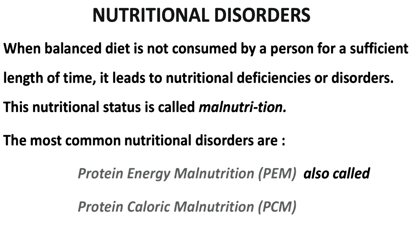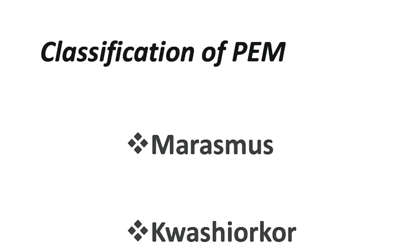When a person is not taking a balanced diet, it leads to nutritional disorders. Those nutritional disorders are of two types: undernutrition, also called malnutrition, and overnutrition. Undernutrition is also called protein energy malnutrition or protein calorie malnutrition, and there are two types: kwashiorkor and marasmus. Overnutrition is seen in the form of obesity.